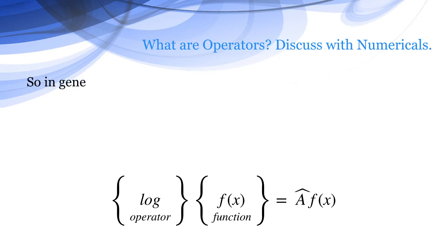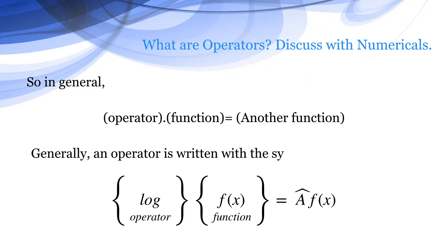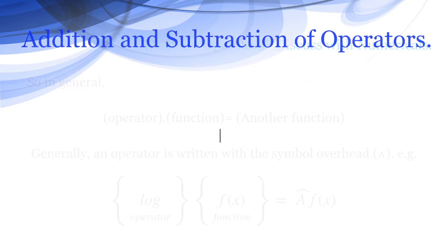In general, an operator operated on a function gives another function. An operator is written with a hat symbol overhead. For example, log is an operator while f(x) is a function, which can be written as Â·f(x).